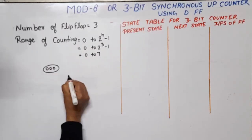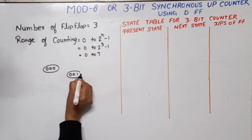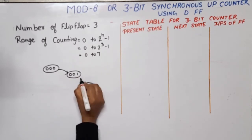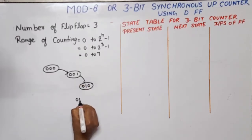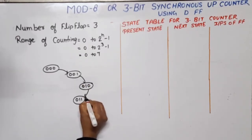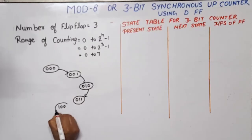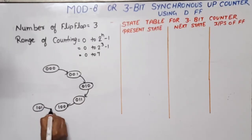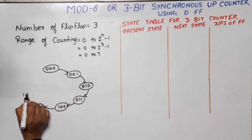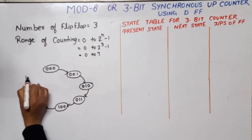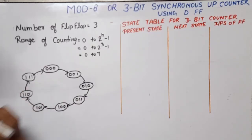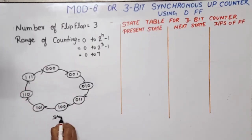Now I will make the state diagram. Starting from zero: from 0 the next state is 1, from 1 the next state is 2, from 2 the next state is 3, from 3 the next state is 4, from 4 the next state is 5, from 5 the next state is 6, from 6 the next state is 7, and from 7 the next state goes back to 0. This is the state diagram.